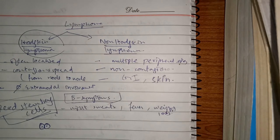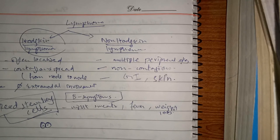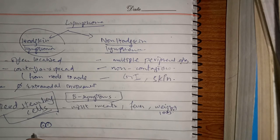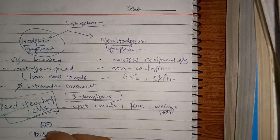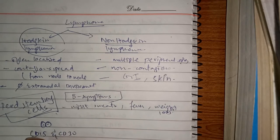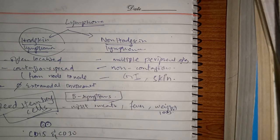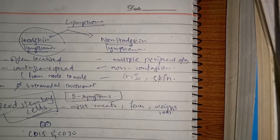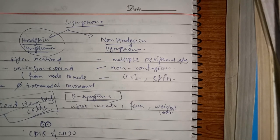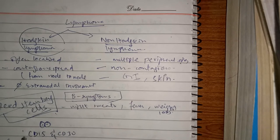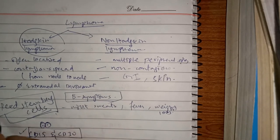In Hodgkin lymphoma, Reed-Sternberg cells are large B cells with multilobed nuclei and prominent nucleoli. They are positive for CD15 and CD30, but are not positive for standard B cell markers CD19, CD20, and CD21. In non-Hodgkin lymphoma, Reed-Sternberg cells are absent.